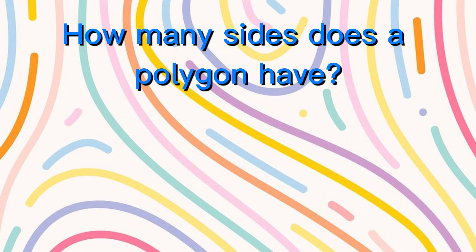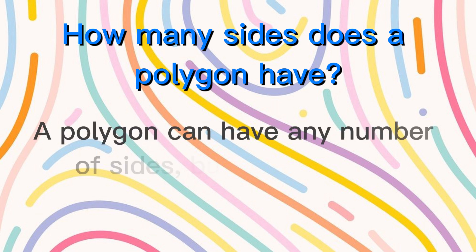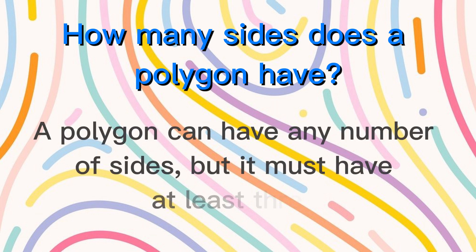How many sides does a polygon have? A polygon can have any number of sides, but it must have at least three.